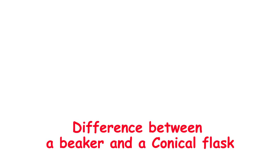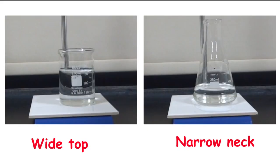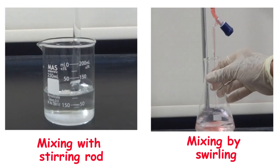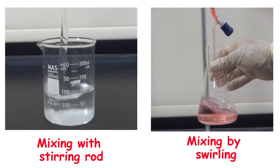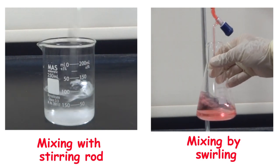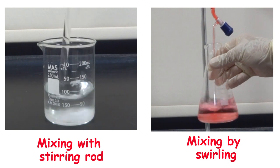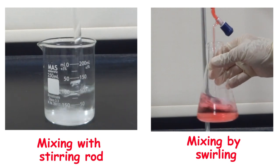Both a beaker and a conical flask are containers. When do we use each? A beaker has a wide top, while the conical flask has a narrow neck. In a beaker, mixing needs a stirring rod. While in a conical flask, mixing will take place by swirling.